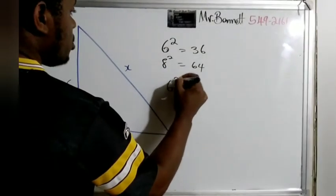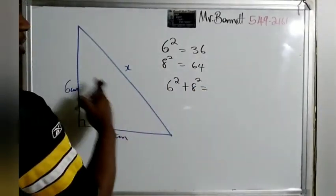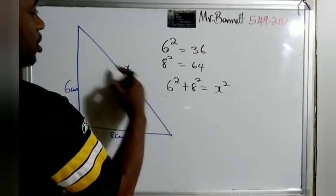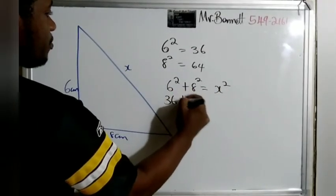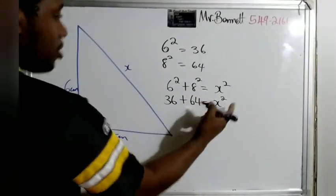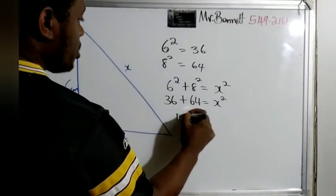So 6² plus 8² would equal this side squared. Let's just call it x². Let's do it: 6 times 6 is 36, 8 times 8 is 64. That will be the number of squares, so we get 100.